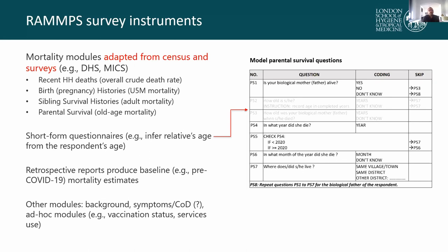One of the appeals of these instruments for estimating mortality is that they produce retrospective reports, meaning they produce both a baseline estimate as well as an estimate for a period that could be affected by possible excess mortality, and therefore directly produce excess mortality estimates. In addition to the core mortality modules, we will also include questions about background characteristics of individuals, and we are exploring whether to include questions about symptoms to attribute deaths to a specific limited set of causes.